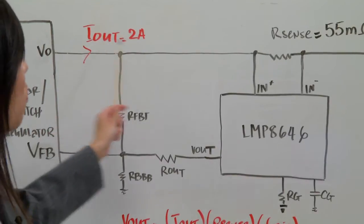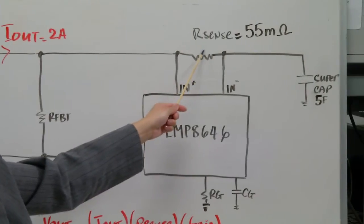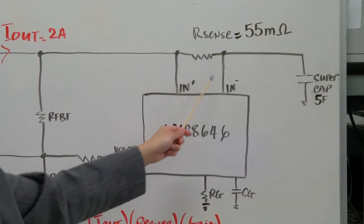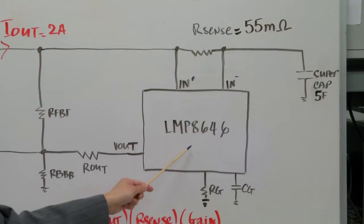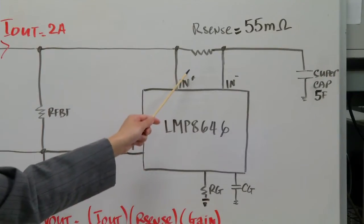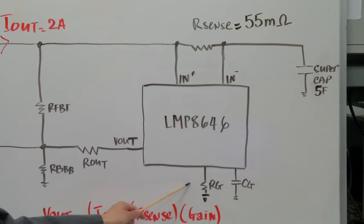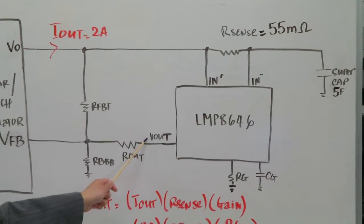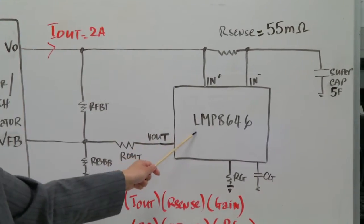So the Iout will go through the Rsense creating a voltage drop across the input of the 8646. And that Vsense multiplied by the gain set by the resistor Rg will be equal to the output voltage of the LMP8646.